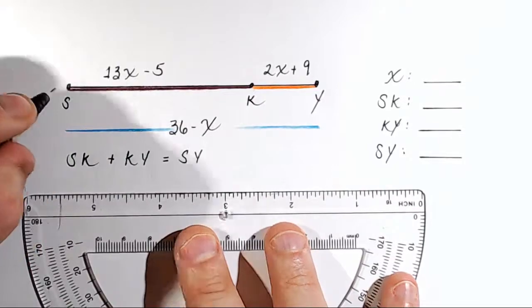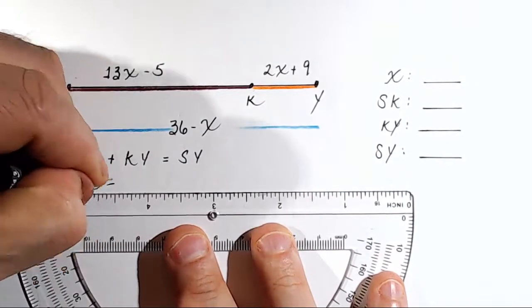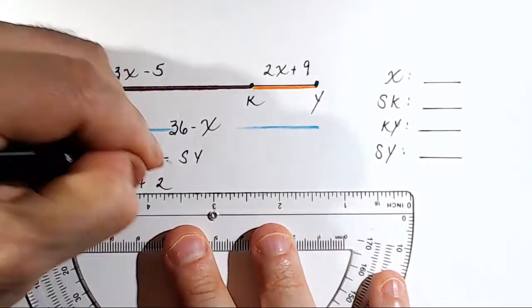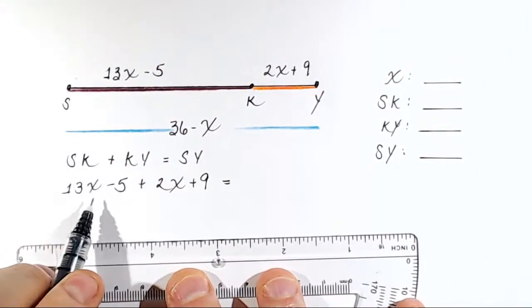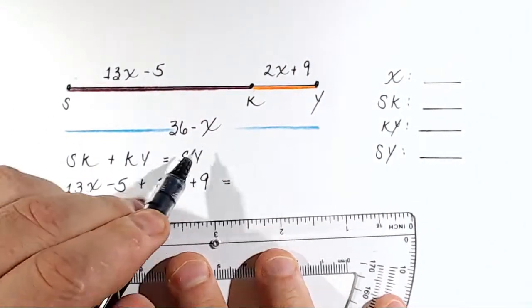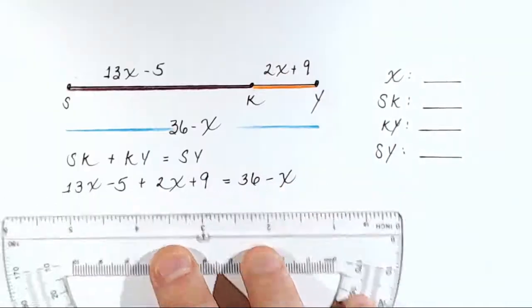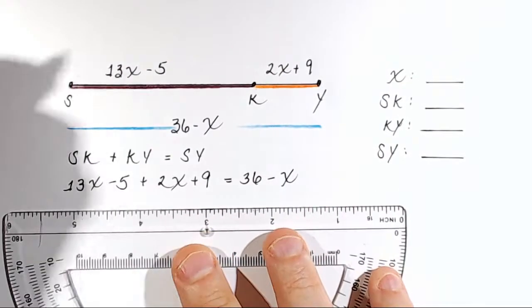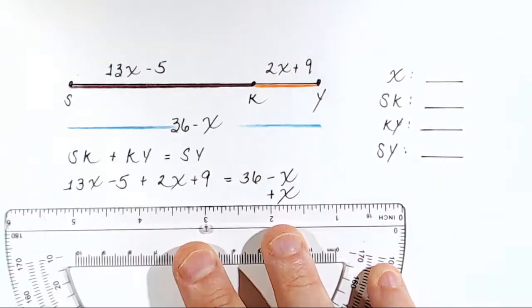The distance from S to K is defined by the algebraic expression 13X minus 5, plus the distance from K to Y, which is given by 2X plus 9, equals SY, which is 36 minus X. So here's what I'd like to do: I would really like to gather all my X terms on the left-hand side of the equation and move everything else to the right-hand side. So the first thing I'll do is add X because currently it's being subtracted on the right. So we'll add it to both sides.